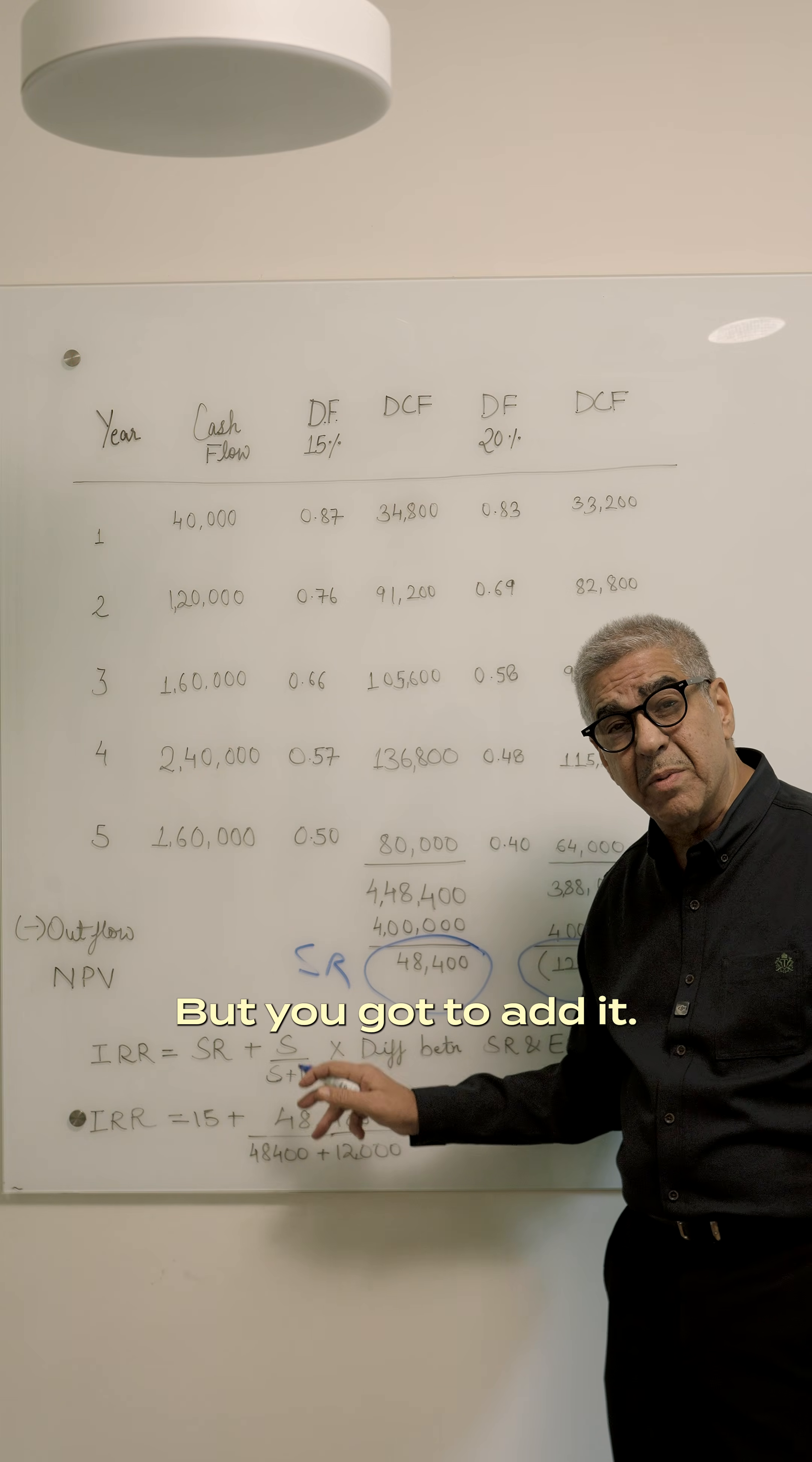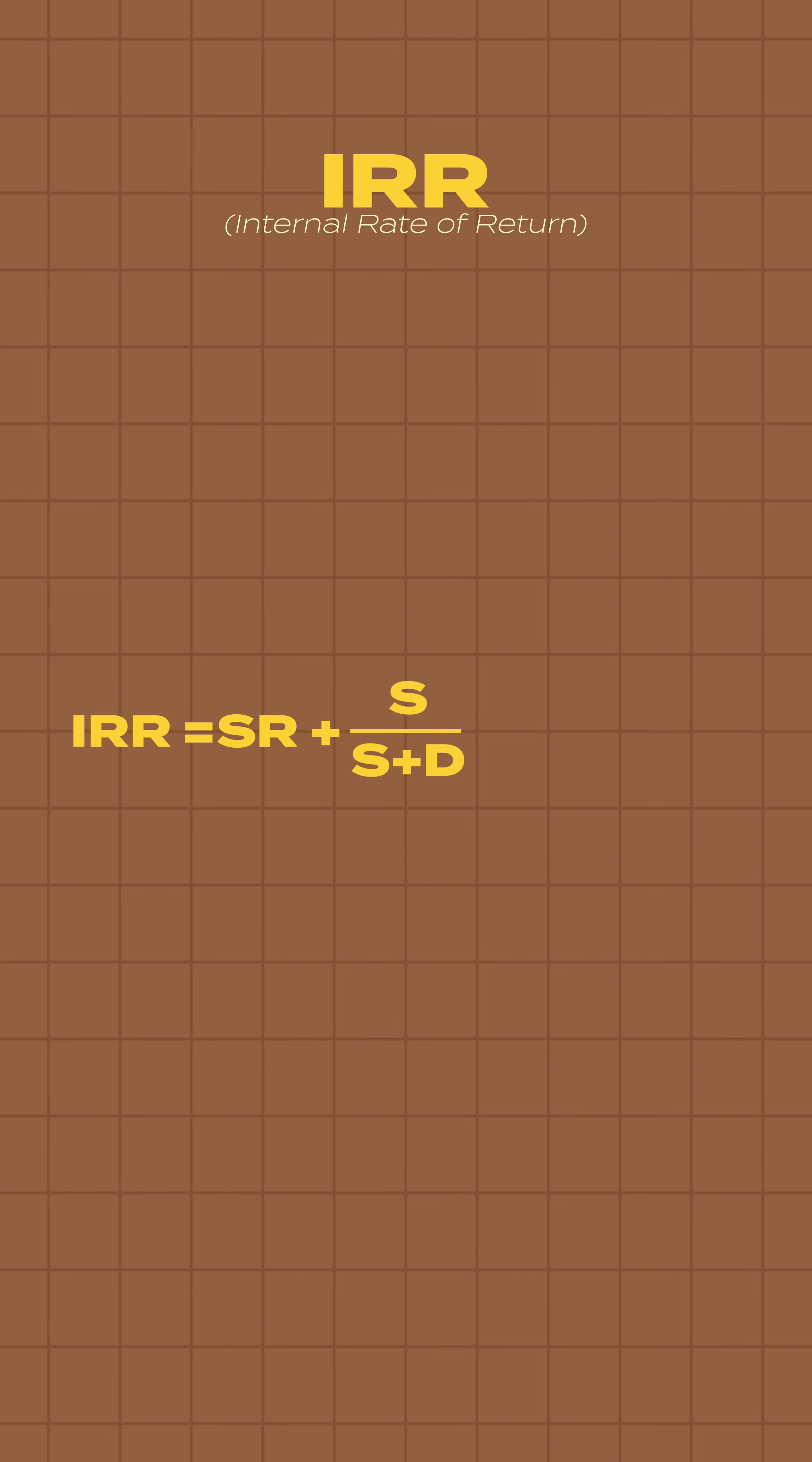Please note, deficit is a negative number but you got to add it. So start rate plus surplus plus deficit multiplied by the difference between start and end rate.